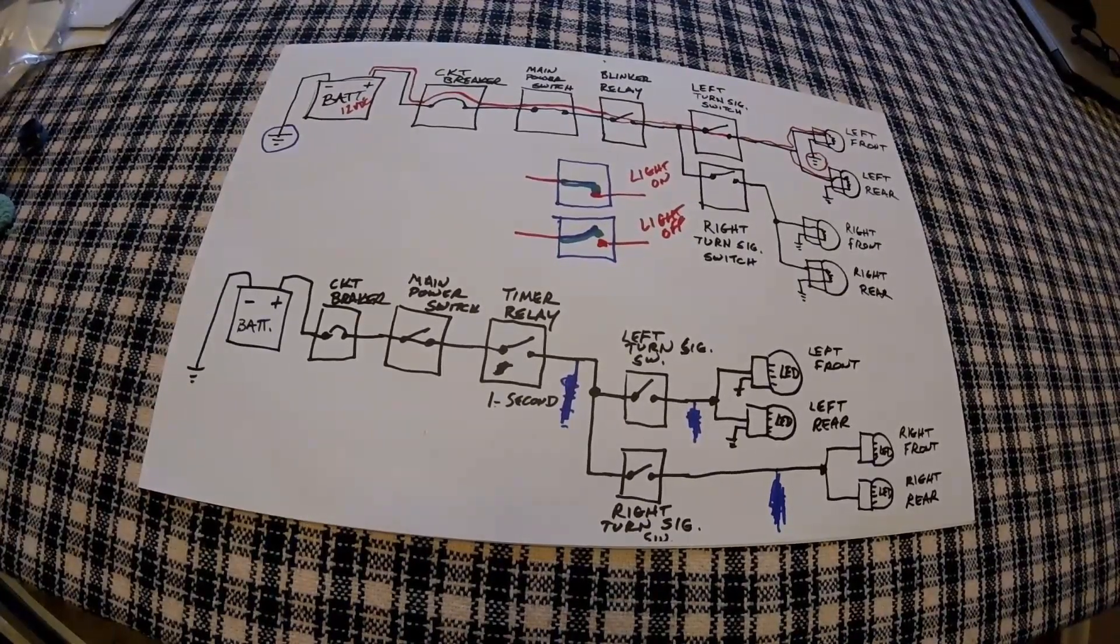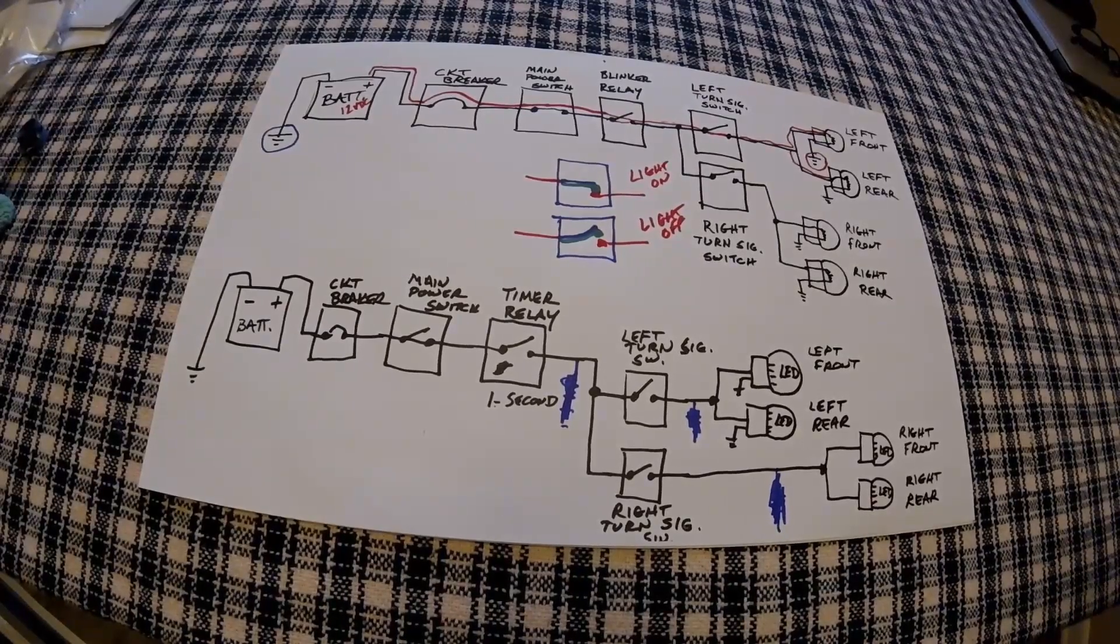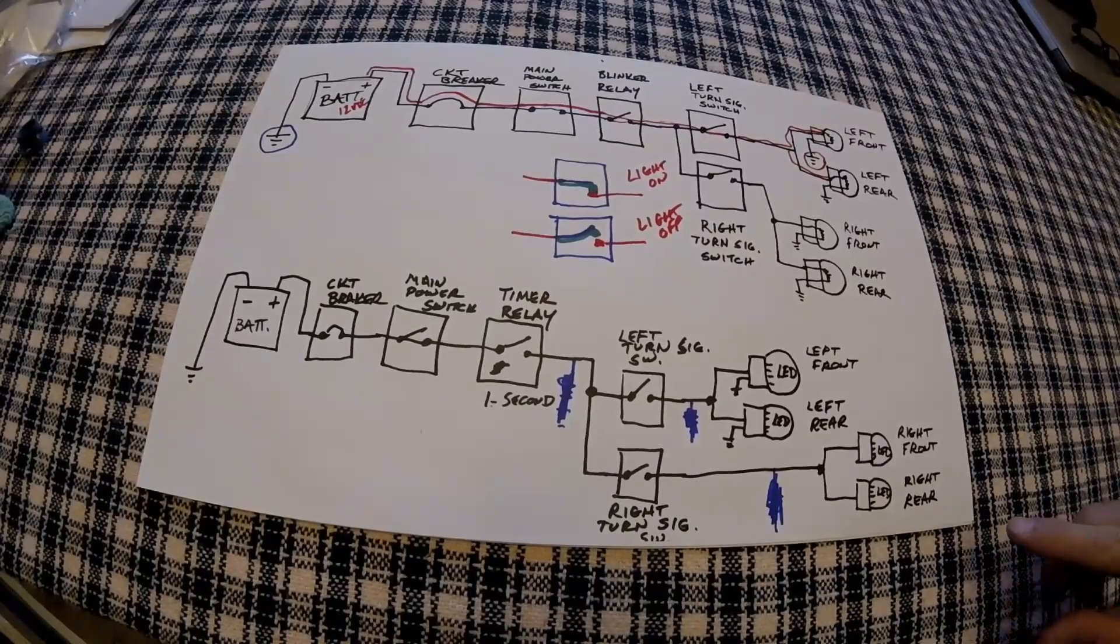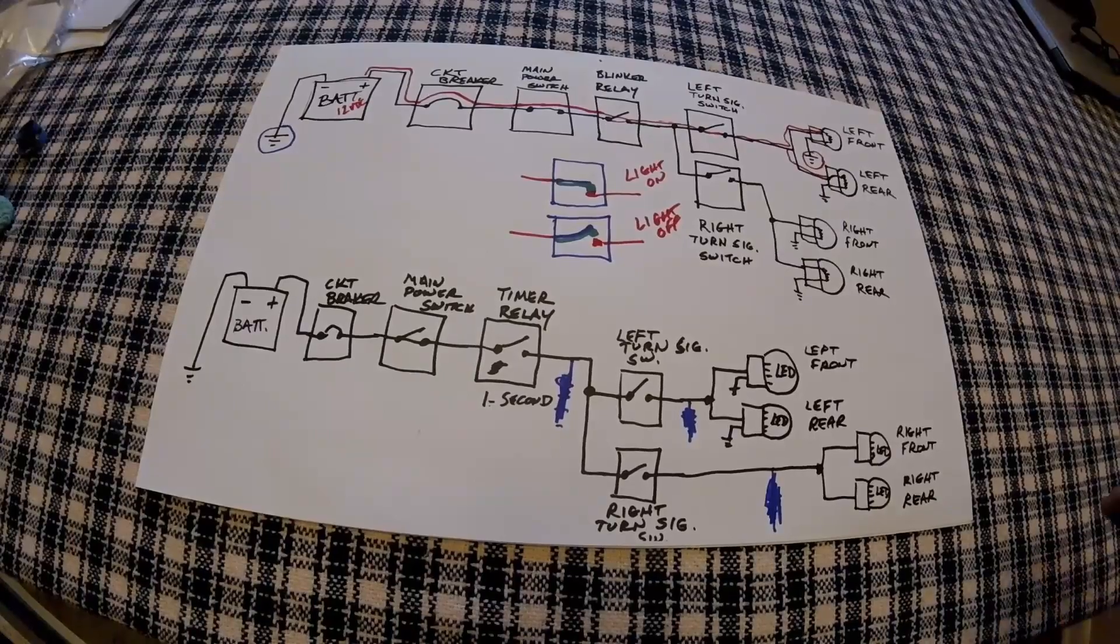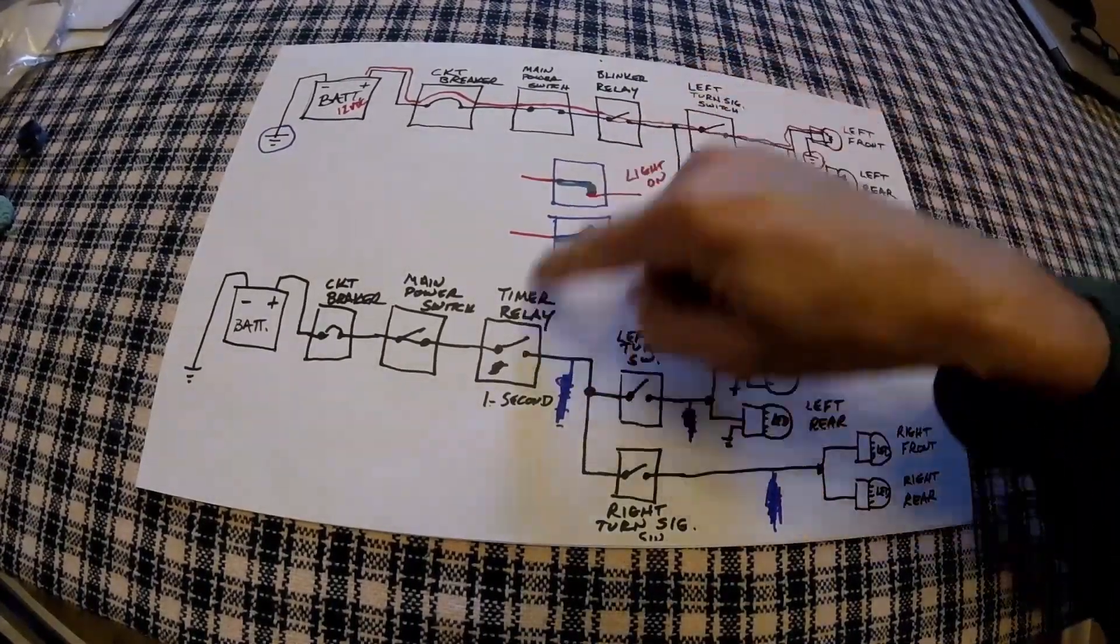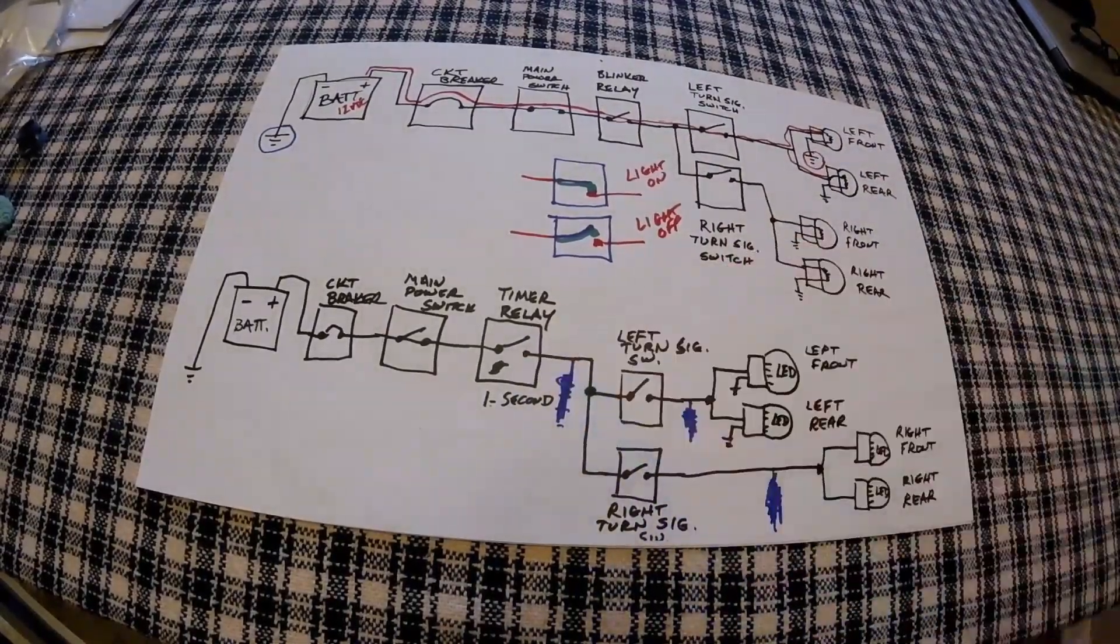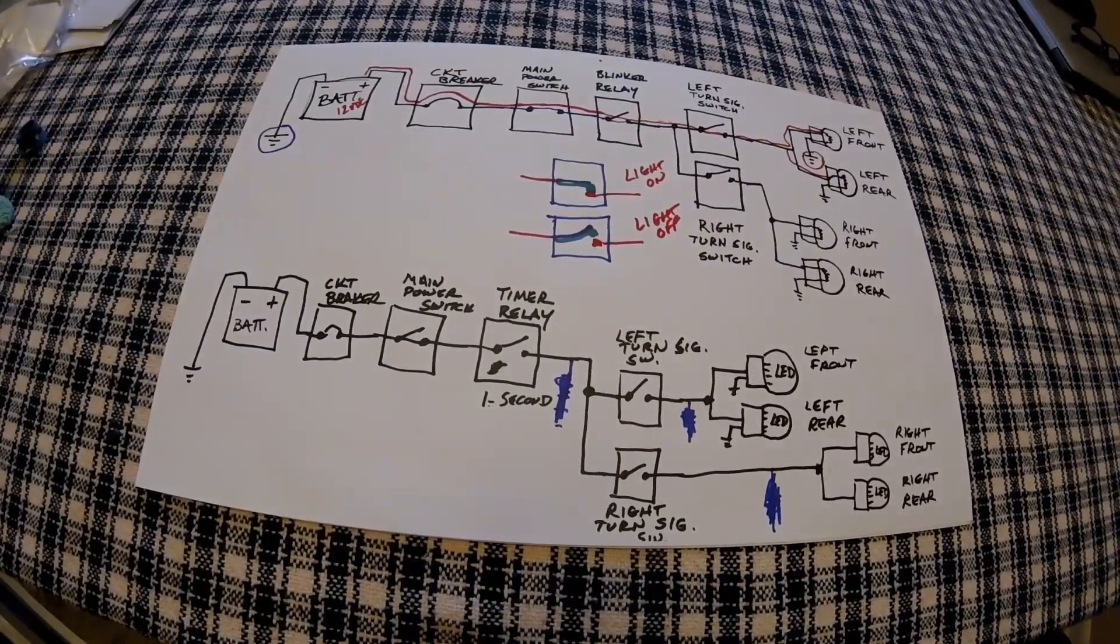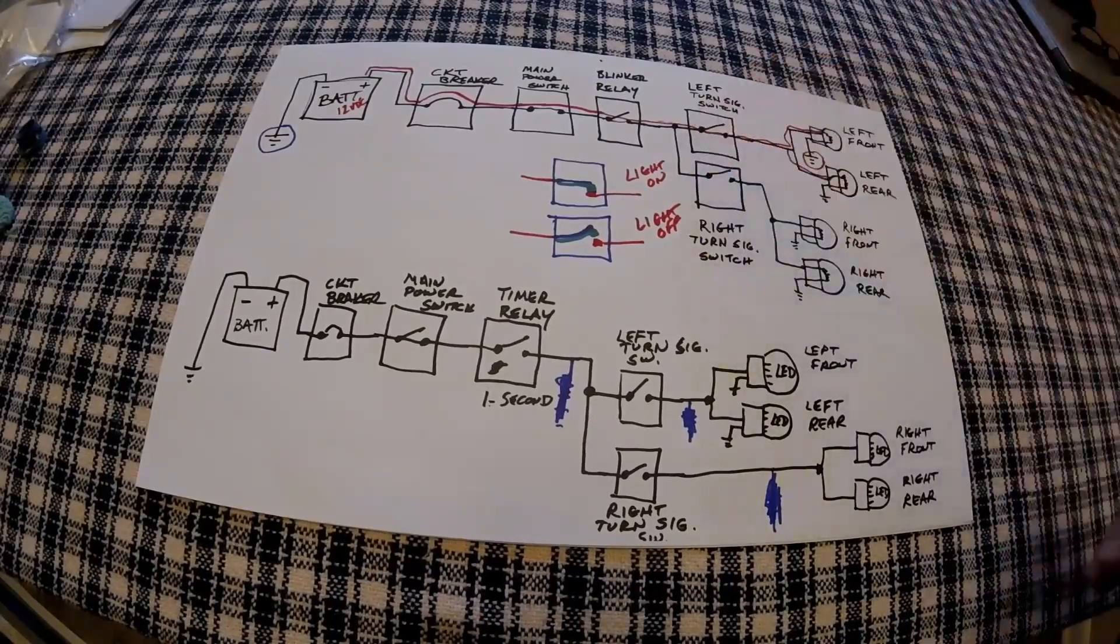Now I'm going to do a practical application with a meter and show you the exact draw of incandescent bulbs versus the draw of LED bulbs. And I'll show you how they work with a simple setup. I'll use a battery charger and then I'll change between the two different relays and have the two different bulbs. Incidentally, this timer relay will work with regular incandescent bulbs. But I wouldn't see much of a need to buy it if you already have a blinker relay.